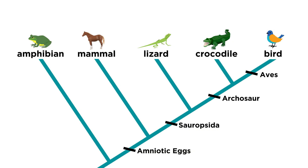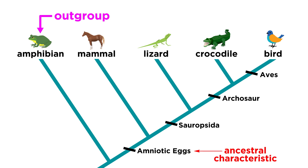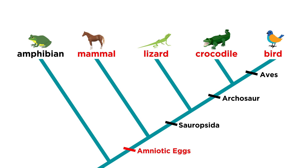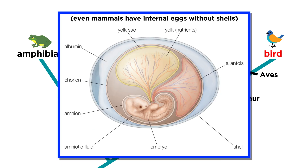Take a moment to review the diagram and use your knowledge of how cladograms work to determine which groups are more closely related and which are more distantly related. In this cladogram, the amphibians are the outgroup, and the ancestral characteristic is amniotic eggs. The embryos of mammals, crocodiles, lizards, and birds all develop in amniotic sacs filled with fluid which keeps the embryo moist.